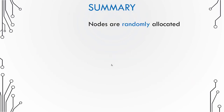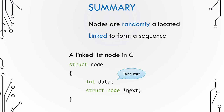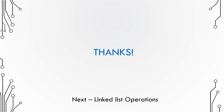In a linked list, nodes are randomly allocated and linked to form a sequence. In C language, a node can be represented using a structure. The first variable is the data part and the next variable is a pointer to the next node — the variable 'next' stores the address of the next node.